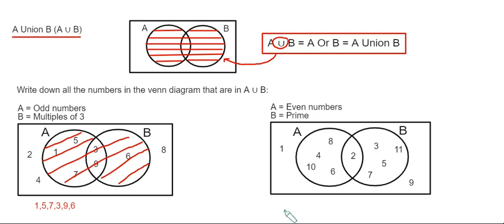So let's have a look at our second example then. So this time we set A we have the even numbers and set B we have the prime numbers. So the ones we're looking at here then for A union B are these ones here.